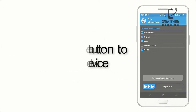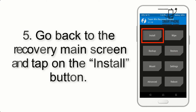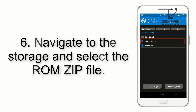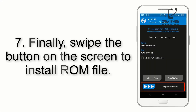Step 4: Swipe the button to wipe the device. Step 5: Go back to the recovery main screen and tap on the Install button. Step 6: Navigate to the storage and select the ROM zip file.